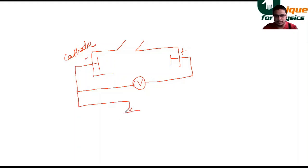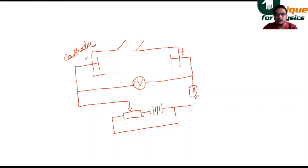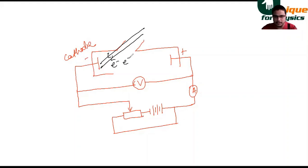We attach it to a variable potential so that we can change the potential as per requirement. We connect it to an ammeter to measure the amount of current flowing through the circuit. The light ray falls on the photocathode material so that electrons are ejected out and accelerated towards the anode.